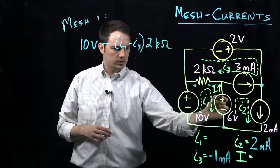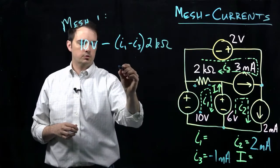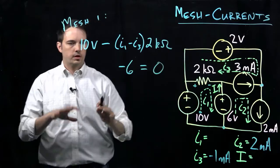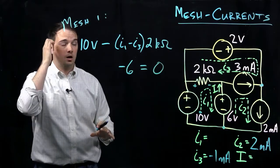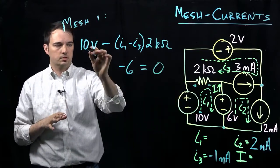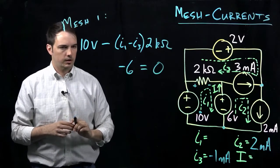And then we see we have another voltage drop across the 6 volt source, which will be minus 6 volts, and this is all equal to zero. I've written this equation using the convention that any voltage rise is a positive quantity and any voltage drop is a negative quantity.